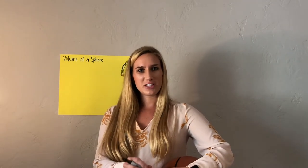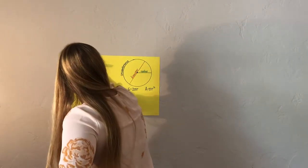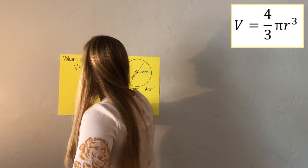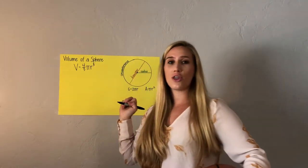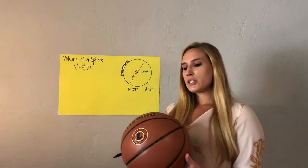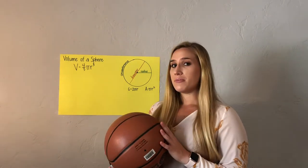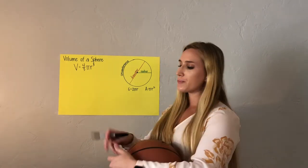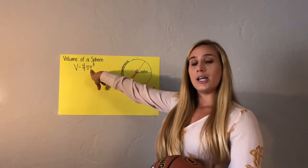The formula is V equals 4 thirds pi r cubed — r to the third power. I was looking at my basketball and I said I really need to figure out what the missing variable is to find the volume of my sphere. The only missing variable I have is R.